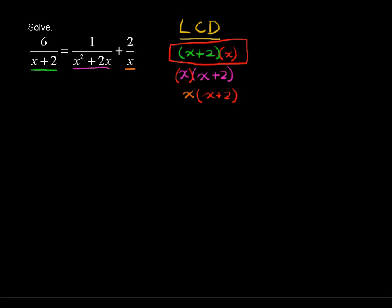So we have this x times x plus 2 over 1 multiplied by our original equation, our original equation, 6 over x plus 2 equals 1 over x times x plus 2.